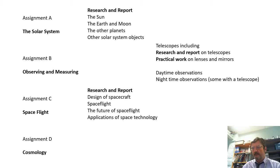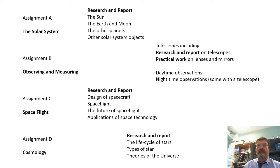Assignment D is about stars and the life cycles of different types of stars, what the different types of star are, and then theories about the universe. You might remember from GCSE about redshift and Hubble and stuff like that—cosmology. Those are the four assignments that you have to do.